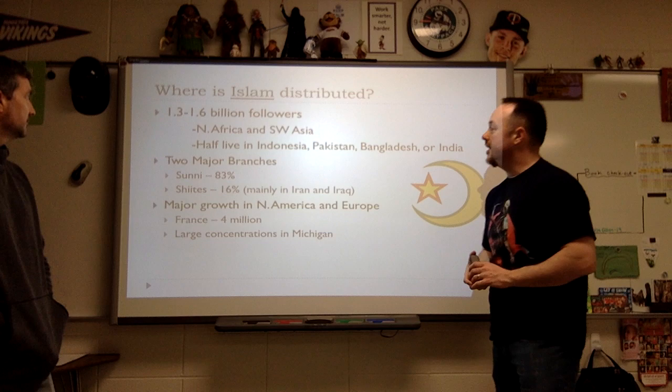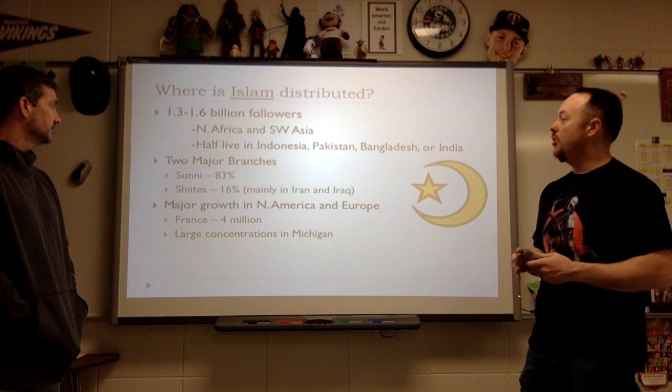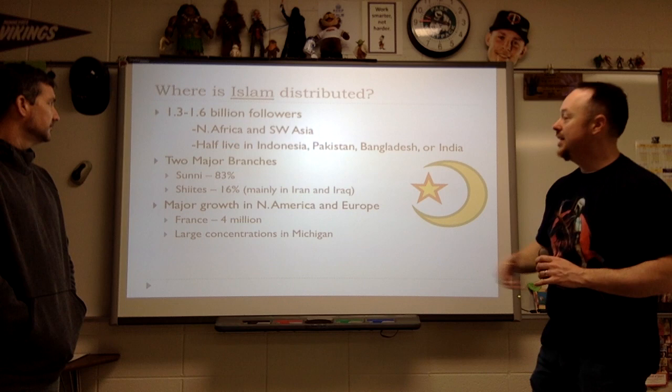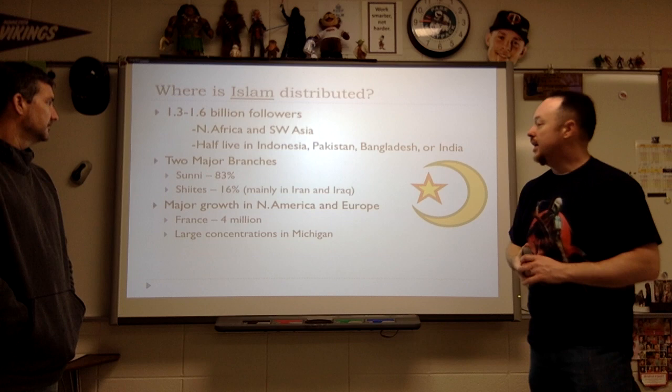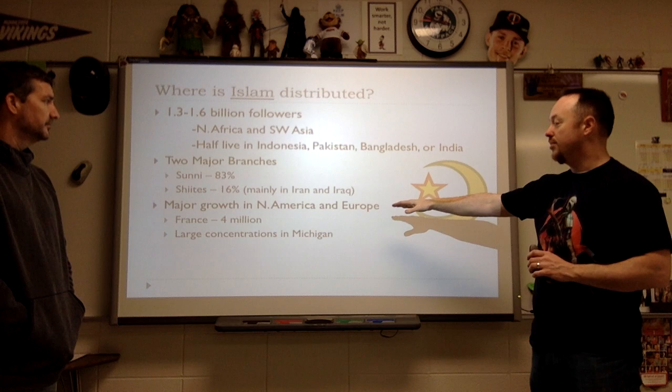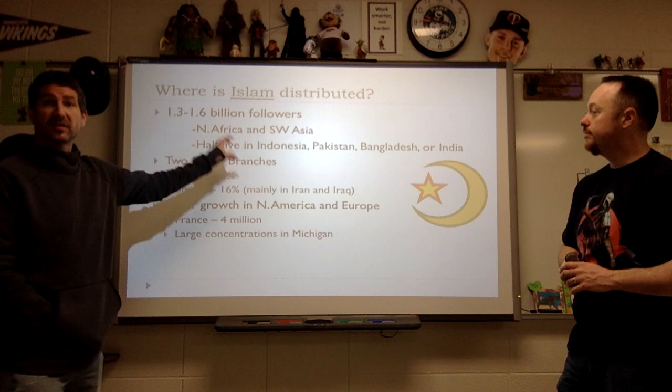Next, when we look at the distribution of Islam, there are about 1.3 to 1.6 billion followers across the globe — the second largest universalizing religion. A lot of which is in North Africa and Southwest Asia. They have two major branches: Sunni, which is about 83% of the population, and Shia, which is about 16%, mostly in Iran and Iraq. We're seeing growth in North America and Europe, which we've been discussing with migration.